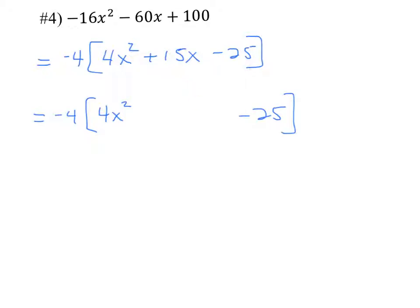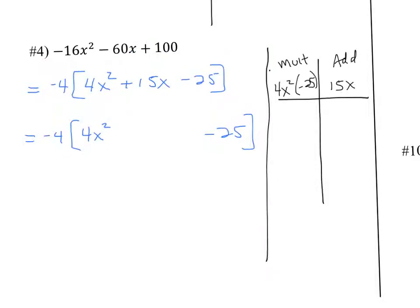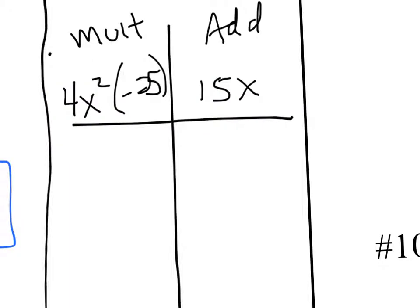At this point we continue to bring down the negative 4 in the brackets. 4x squared is our first term and minus 25 is our last term. We'd like to factor by grouping, so this middle term of 15x is going to get split into two separate terms. To determine how it splits, we make a little t-chart: we multiply to get 4x squared times negative 25 and add to get 15x. 4 times negative 25 is negative 100, so we need to multiply to get negative 100x squared, and those same two terms add to be 15x.